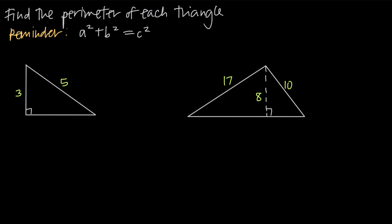In this video we're talking about how to find the perimeter of a triangle. Remember that the perimeter of any object is just the distance around the edge of the object. So if you imagine that you walked around the edge, all around the outside, how far would you travel? That's the idea of perimeter.